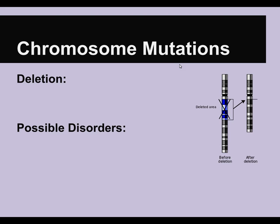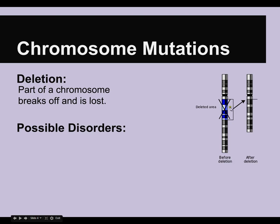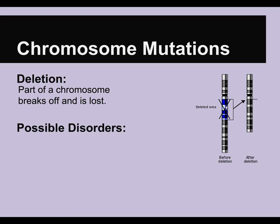Here are the chromosome mutations. The first one is called a deletion, and it's just what it sounds like — part of the chromosome breaks off and is lost. Chromosomes can detach and reattach; this happens during crossing over as well. So the idea that bits of chromosome can break off and be reattached is fairly common. A deletion mutation is when part of the chromosome breaks off and is lost — we don't know where it goes, or it reattaches somewhere it's not supposed to be. If it is completely lost, it's called a deletion.